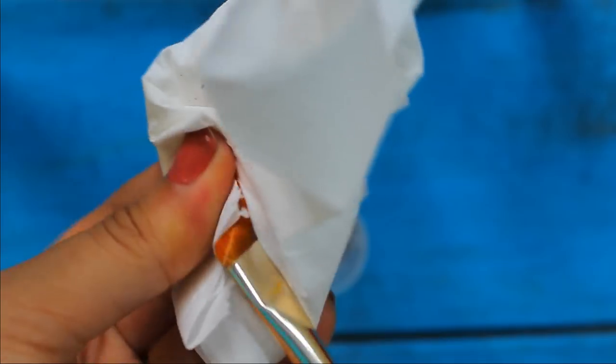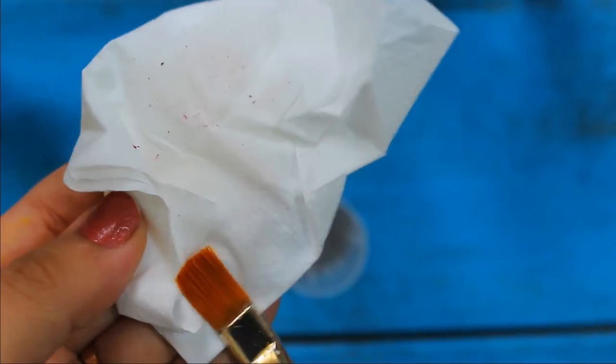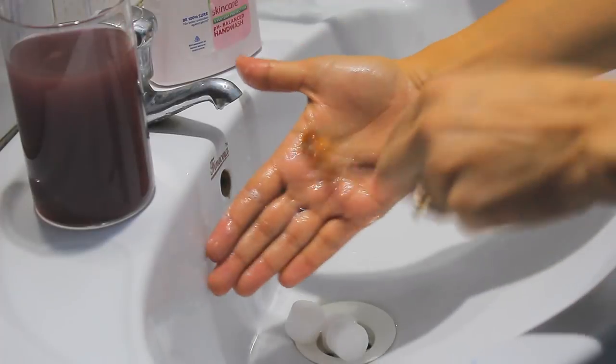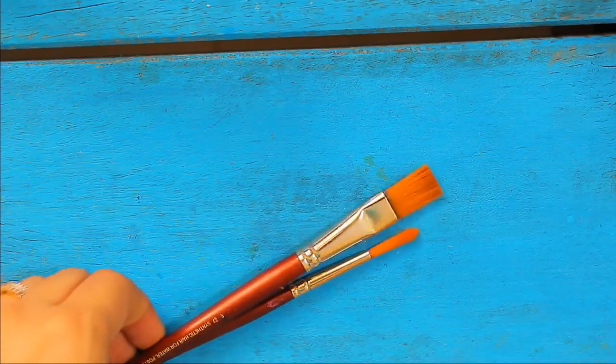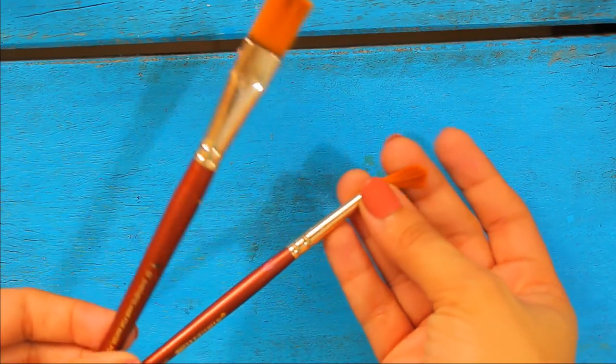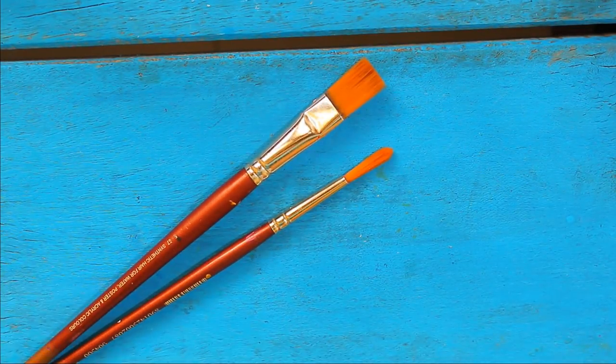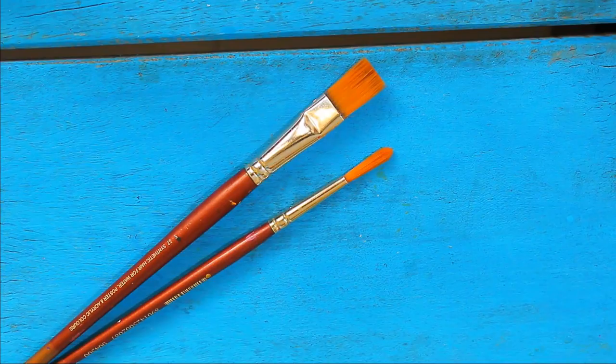And now there are no color particles left on the brush. Just wash the brush using the same method to remove the oil present in the brush. Now the bristles of the brush are cleaned properly and the brush is back to its original shape and texture.